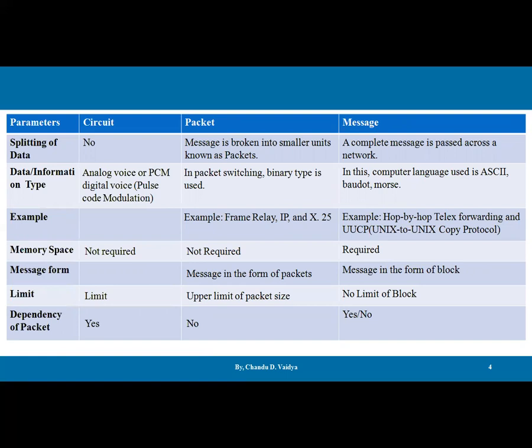Data information type: in circuit switching, analog voice or PCM (pulse code modulation) is used for data transfer. In packet switching, binary type is used. In message switching, computer languages like ASCII, Baudot, and Morse are used. For example, circuit switching: telephone. Packet switching: frame relay, IP, X.25. In message switching, a disk is required to store these messages entirely.